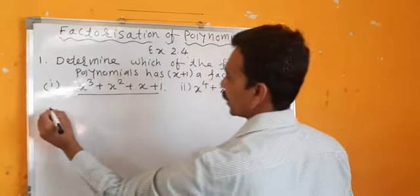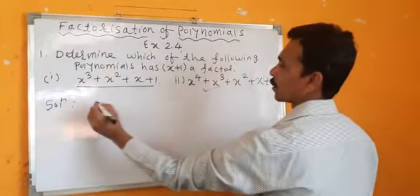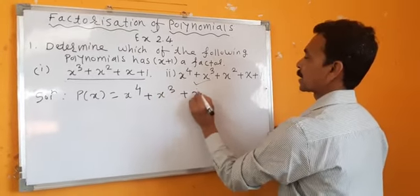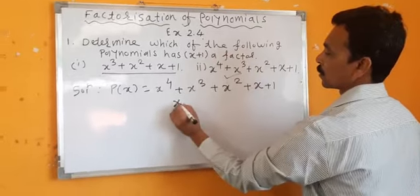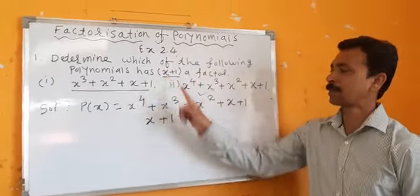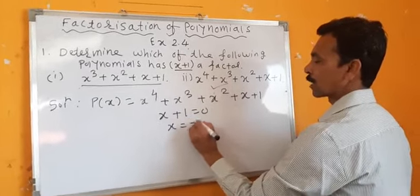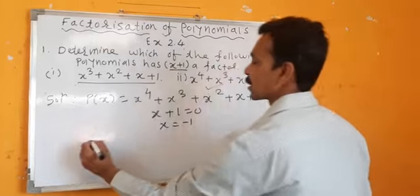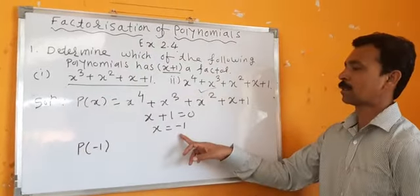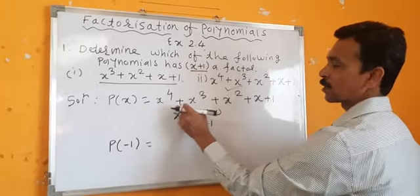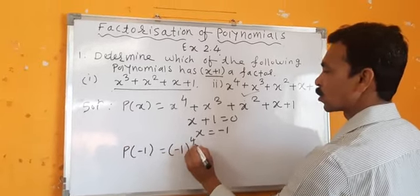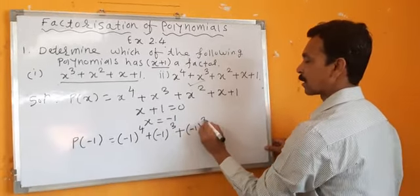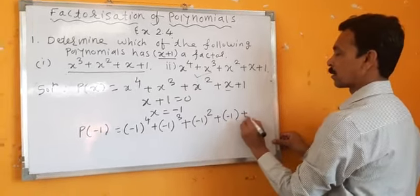Second sum: P of x is equal to x raised to 4 plus x cubed plus x squared plus x plus 1. x plus 1 equals 0, so x equals minus 1. I will place this in P of x: P of minus 1 equals minus 1 raised to 4 plus minus 1 cubed plus minus 1 squared plus minus 1 plus 1.